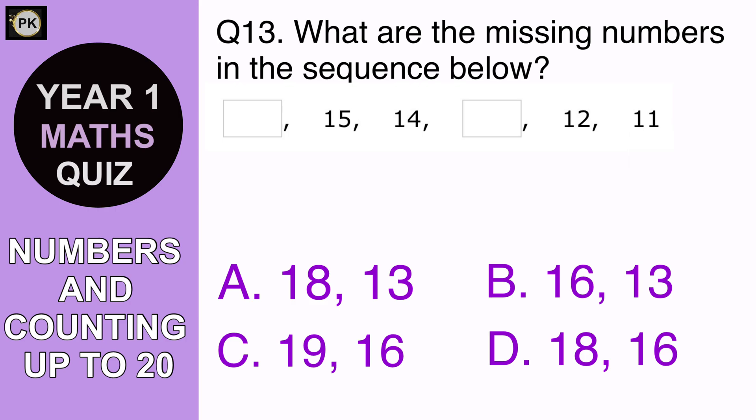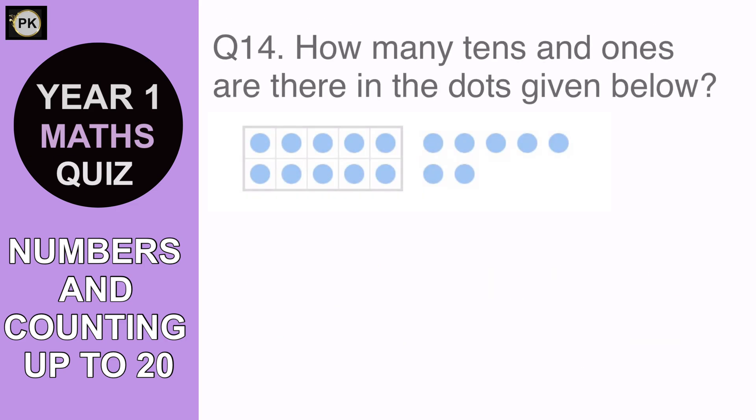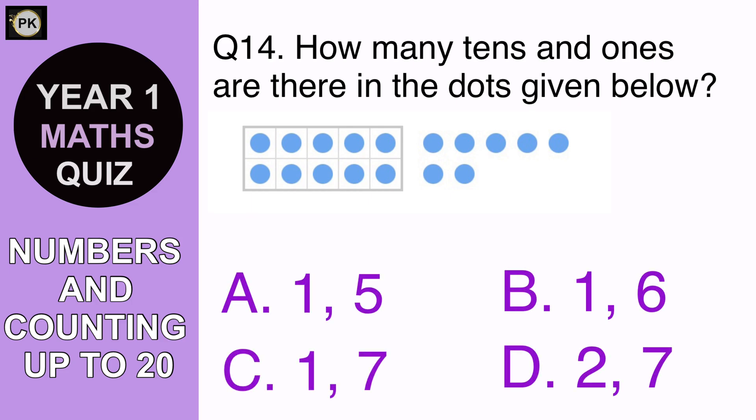How many tens and ones are there in the dots given below? A 1 and 5, B 1 and 6, C 1 and 7, or D 2 and 7. And the answer is C 1 and 7.